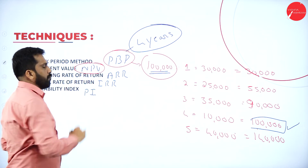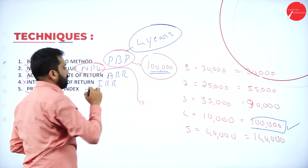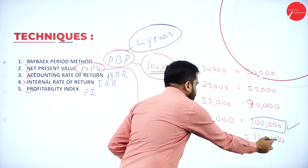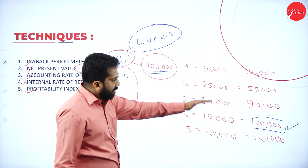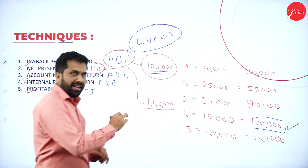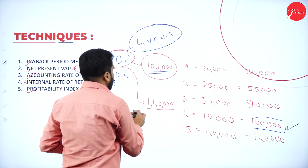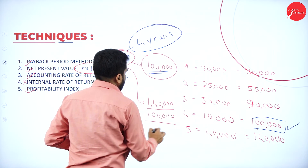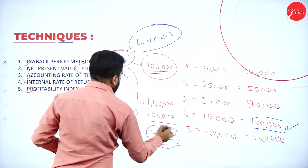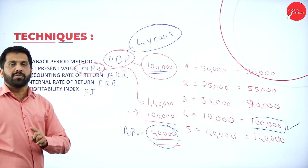Net Present Value — what is the net present value? Simple example: your total cumulative income is 1,40,000. Minus your investment of 1,00,000. Your answer is 40,000. This is called NPV — Net Present Value.